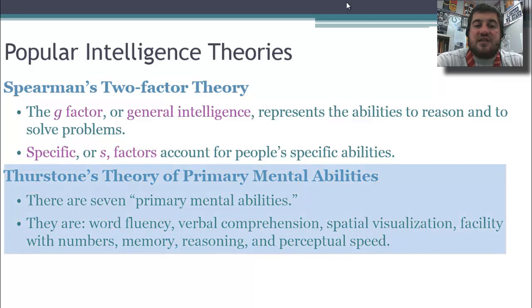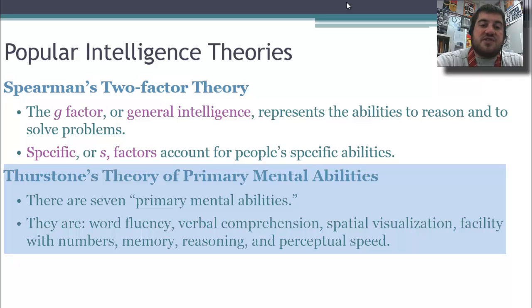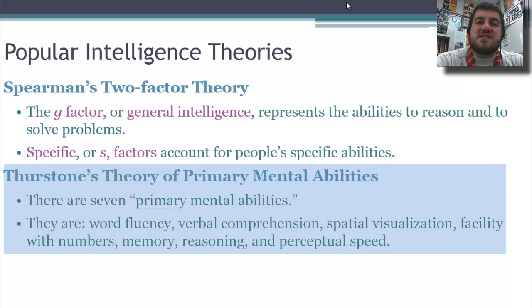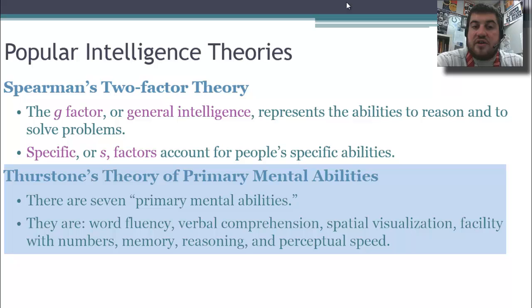Thurston's theory of primary mental abilities says there are seven primary mental abilities. You'll just need to know that he thinks there are seven. They are word fluency, verbal comprehension, spatial visualization, facility with numbers, memory, reasoning, and perceptual speed. Those are what make up a person's intelligence according to Thurston.